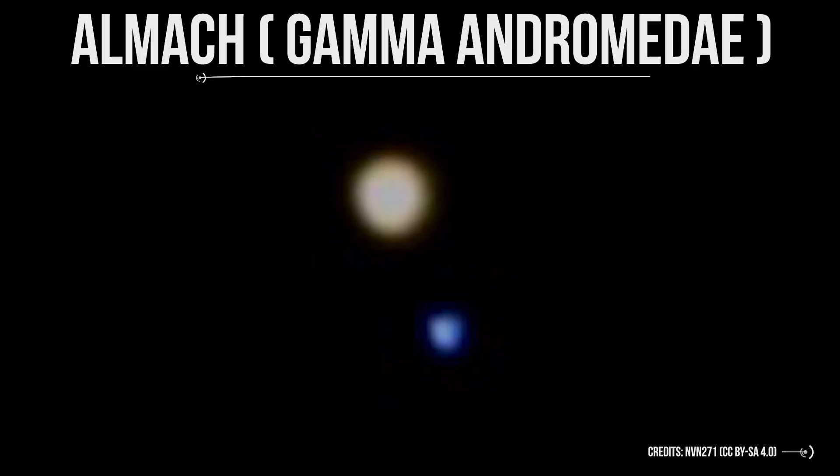The third star, Almach, or Gamma Andromeda, is Andromeda's foot. It is a multi-star system featuring a central giant orbited by a pair of white dwarves. The star's central giant is 2,000 times more luminous than the Sun.